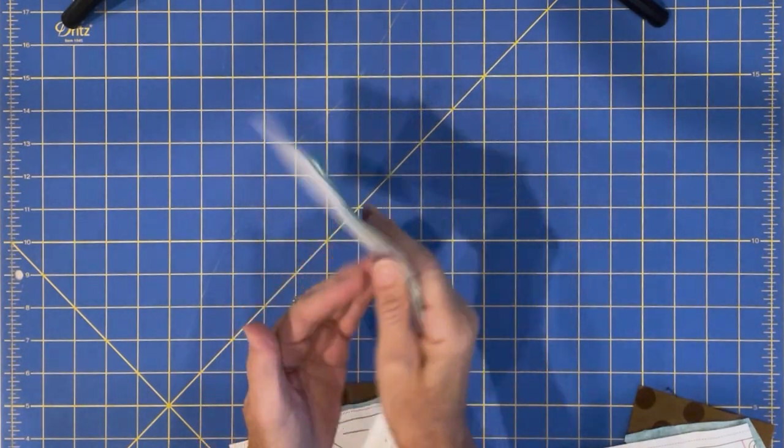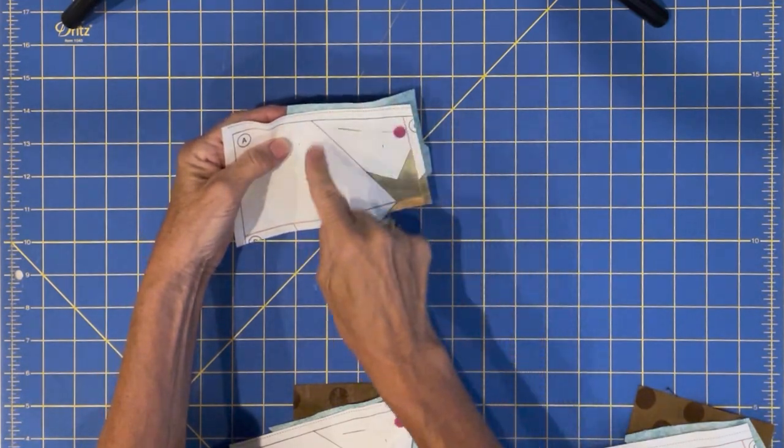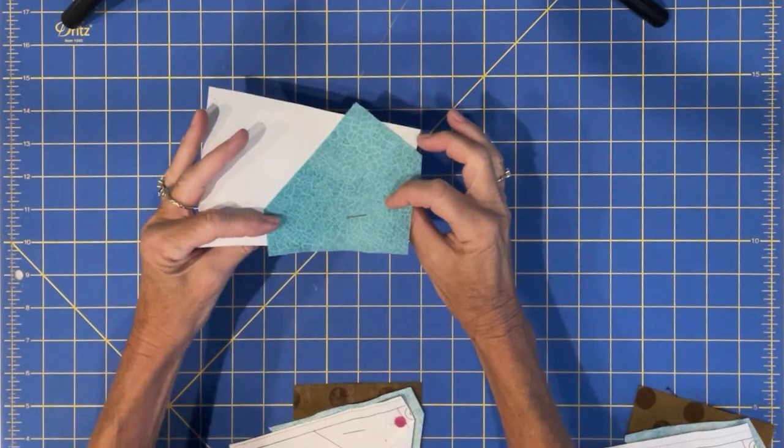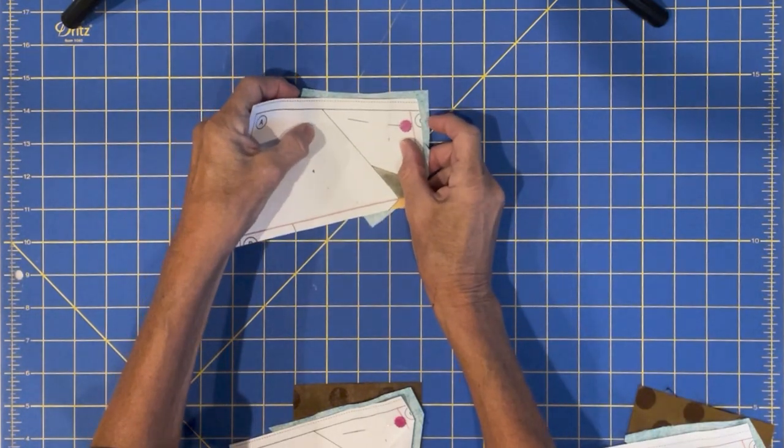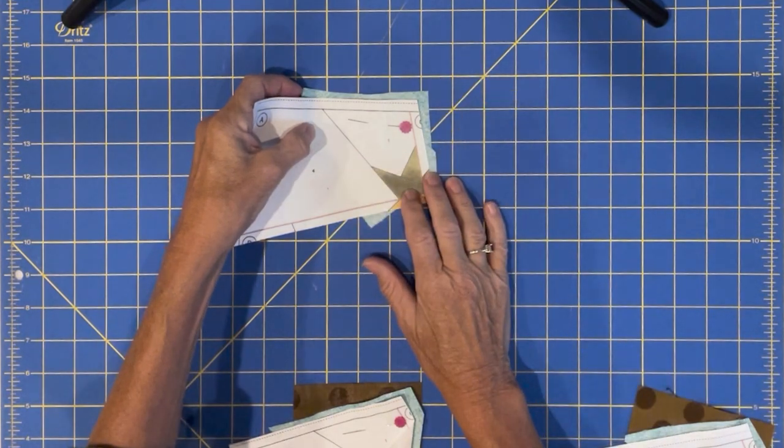So it's wrong side to wrong side and you're just pinning it to the back behind piece one. And you just want a rather generous piece. Don't be fussy cutting anything at this point. Just get a nice big generous glob of fabric there.